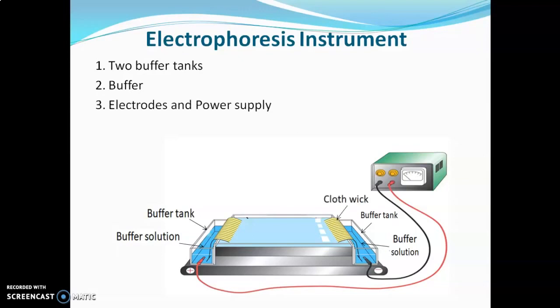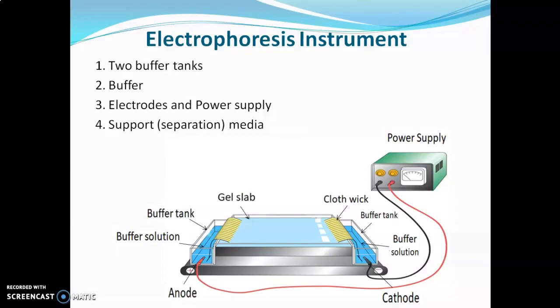Next are the electrodes and power supply. The anode and cathode are immersed in buffer solution in separate tanks and connected to a power supply battery. Next is the support media — here in gel electrophoresis, a gel slab with sample wells is used. In the first sample well, a standard is added, and in the other wells, samples are added. After applying electric current, the sample and standard will start migrating in the gel, and we compare the sample zones with the standard zone.